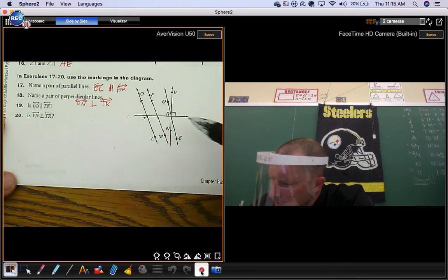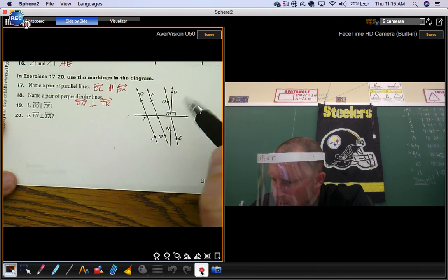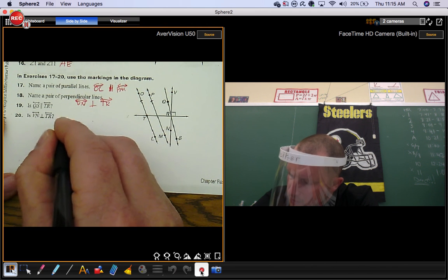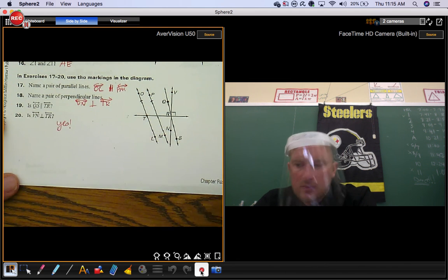Number 20, is line VN, that's this vertical one, perpendicular to line TR. Well, I just said it was. Oop, I skipped on to number 20. But that's yes for number 20.